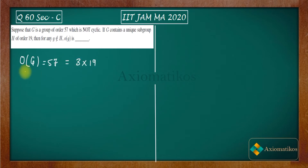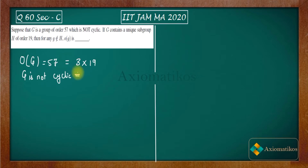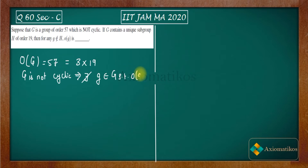It is also given that G is not cyclic. What does not cyclic mean? It means there does not exist any g belonging to G such that the order of g is 57.